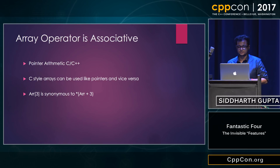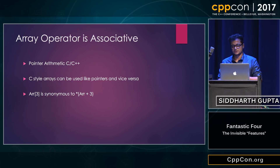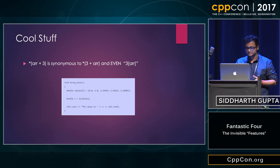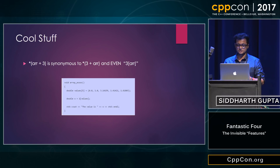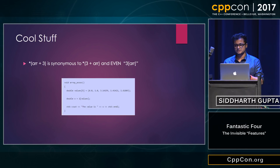Array operators are associative. We all know about pointer arithmetic in C and C++. We can use C-style arrays as pointers and vice versa — sometimes it's useful, but most of the time it isn't. As we can see, array[3] is synonymous with pointer_array + 3. What I learned this summer is that you can actually represent it as the index number first, then the array name — so 3[array]. That's pretty interesting because you can do pointer arithmetic that way and some crazy stuff.